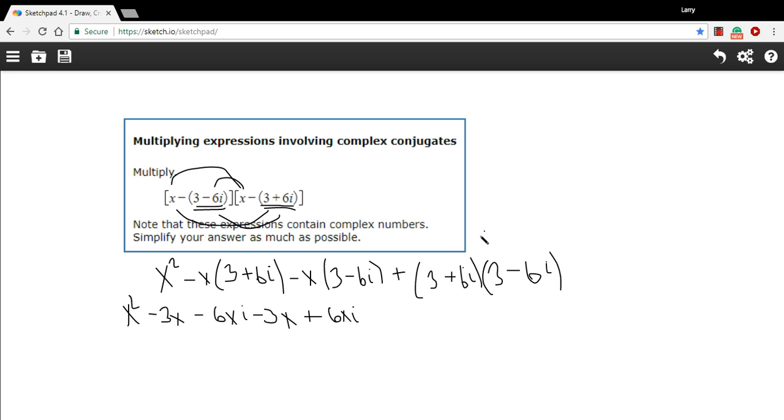So let's foil this part out. So 3 times 3 is 9, and then the outside terms would be 3 times a negative 6i, so minus 18i. And then the inside terms would be 3 times a positive 6i, so plus 18i. And then the last terms would be a negative 36i squared. So that's a 6i times a negative 6i is negative 36i squared.